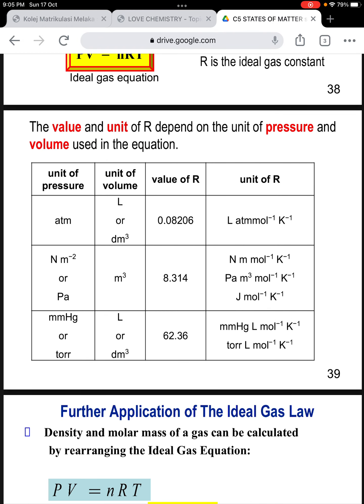The value and unit of R depend on the unit of pressure and volume used in the equation. For example, if the unit of pressure is atmospheric pressure and unit of volume is liter or decimeter cubed, then the value of R is 0.08206. If the unit of pressure is millimeter mercury or torr, and the unit of volume is liter, then the value of R is 62.36 millimeter mercury liter per mole per kelvin or torr liter per mole per kelvin.